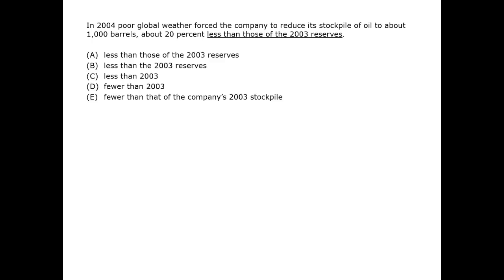We read the prompt. There's something wrong in the underlined portion — the comparison is muddled. Both logically and grammatically, what exactly are we comparing? Is it barrels, years, reserves, or stockpiles? It can only be one.